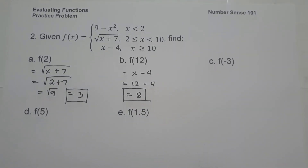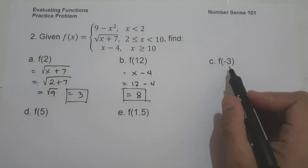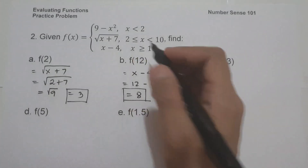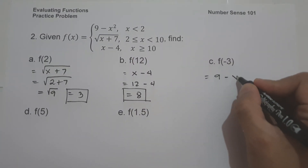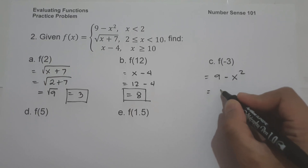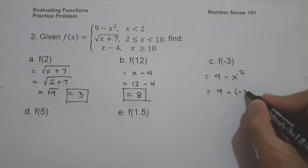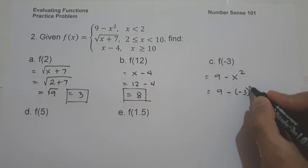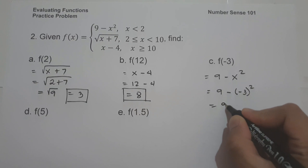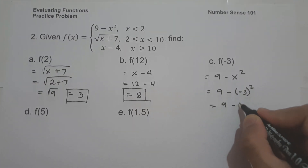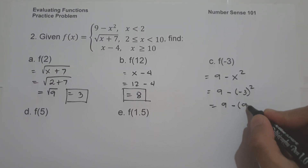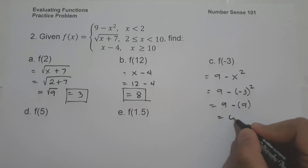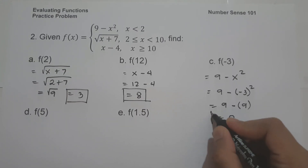On letter c, f of negative 3. Since negative 3 is less than 2, we use 9 minus x squared. This will be 9 minus negative 3 raised to 2, which is positive 9. So 9 minus 9 is 0. This will be our answer.